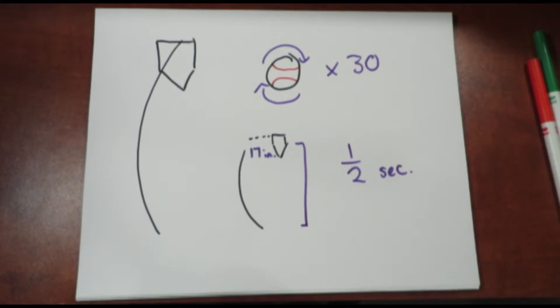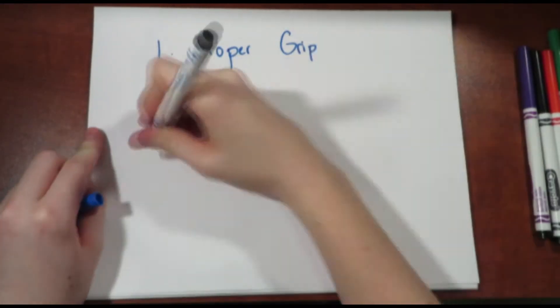But how is this possible? Well, there are two basic factors that create a curveball, the proper grip and air resistance.